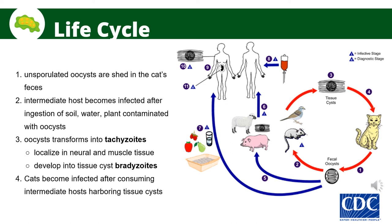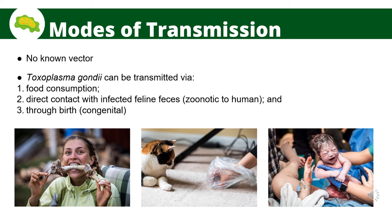Cats may also become infected directly by ingestion of sporulated oocysts from the environment. Animals bred for human consumption and wild game may also become infected, such as pigs, through ingestion of sporulated oocysts in the environment. There is no known or identified vector for Toxoplasma gondii, but there are different ways it can be transmitted. Any warm-blooded animal can be an intermediate host. One of the most common ways this parasite is transmitted to humans is through food consumption, such as eating undercooked or contaminated meat or shellfish.